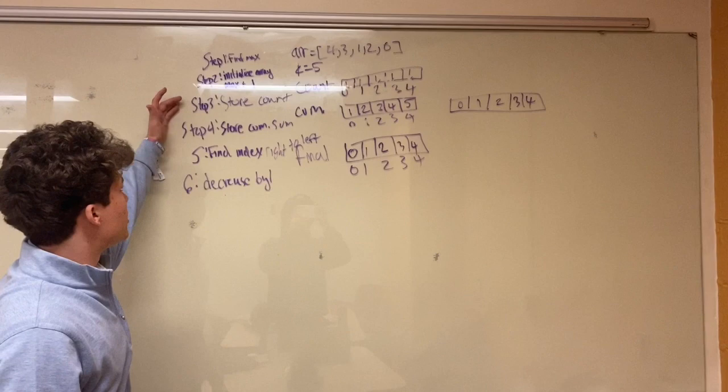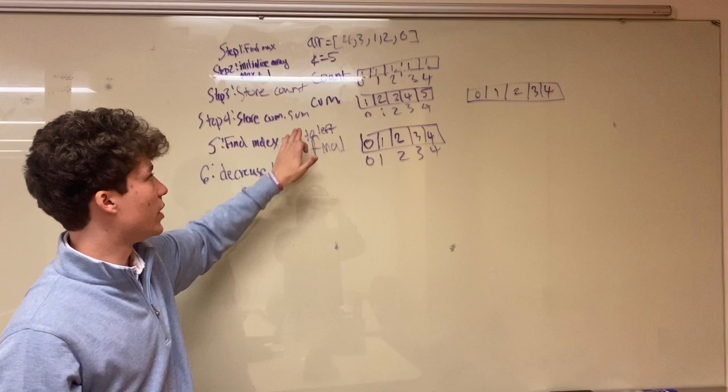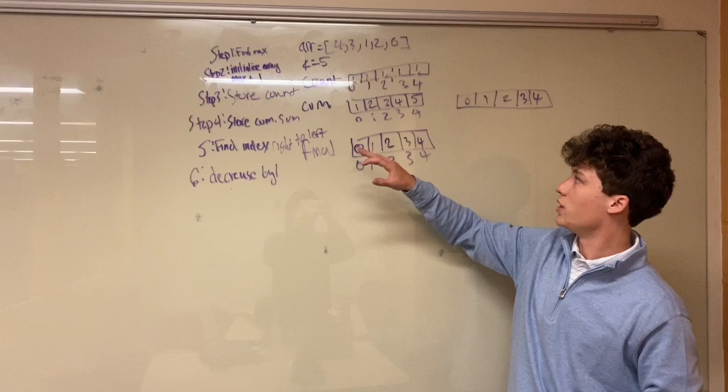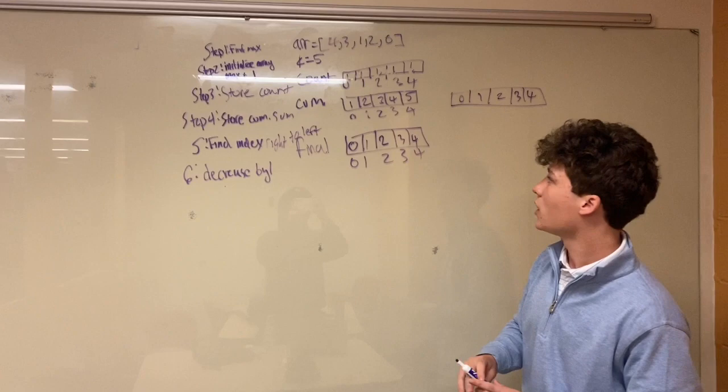We store that, and then we take this count array and we store the cumulative sum in a new array. What this means is we're saying here is basically I have this many values less than or equal to me. And you'll see what this means in a second. Okay, so for the cumulative sum,